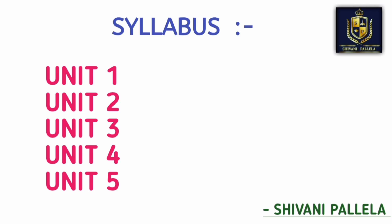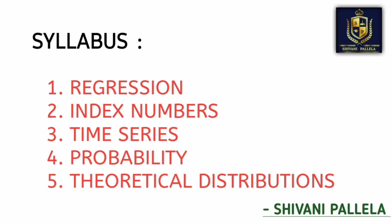As you all know, you have a total of five units in your Business Statistics syllabus. The chapter names are: first — Regression, second — Index Numbers, third — Time Series, fourth — Probability, and fifth — Theoretical Distribution. The total 80-mark question paper will be covered by these five units only.